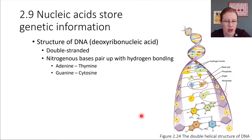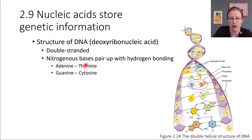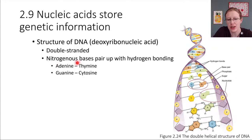In DNA, these are the basic pairing rules: adenine likes to hydrogen bond with thymine and vice versa, and guanine likes to hydrogen bond with cytosine and vice versa. So A always pairs with T, and G always pairs with C.